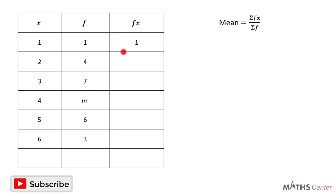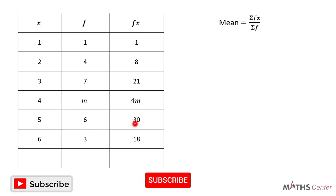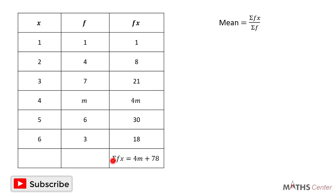Finding the fx values: 1 times 1 gives 1; 4 times 2 gives 8; 3 times 7 gives 21; m times 4 gives 4m; 6 times 5 gives 30; and 3 times 6 gives 18. Adding all fx values: 1 plus 8 plus 21 plus 4m plus 30 plus 18. From algebra this gives us 4m plus 78, since 1 plus 8 plus 21 plus 30 plus 18 equals 78. So sigma fx equals 4m plus 78.